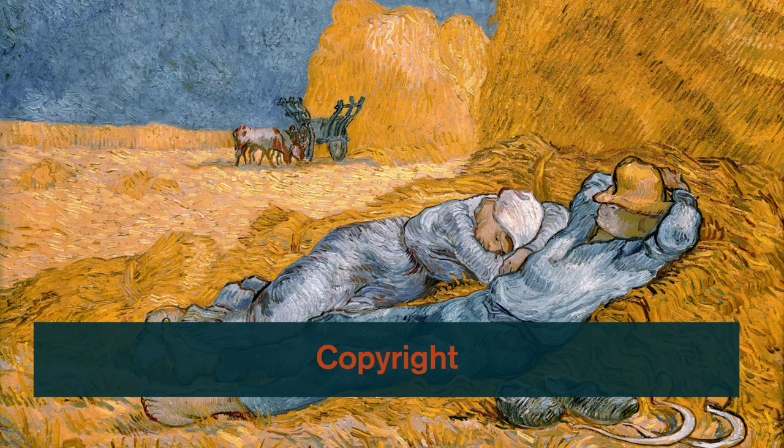The first form we're going to study is copyright. Copyright is a series of exclusive rights over the expression of ideas in material form. This is what we call the idea-expression dichotomy — it protects the way in which ideas are expressed, not the ideas themselves.